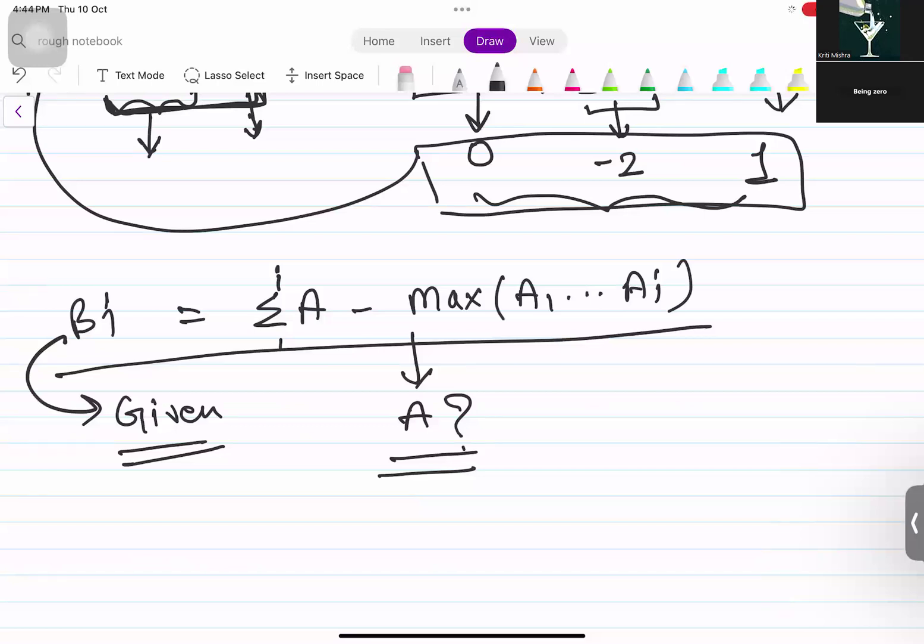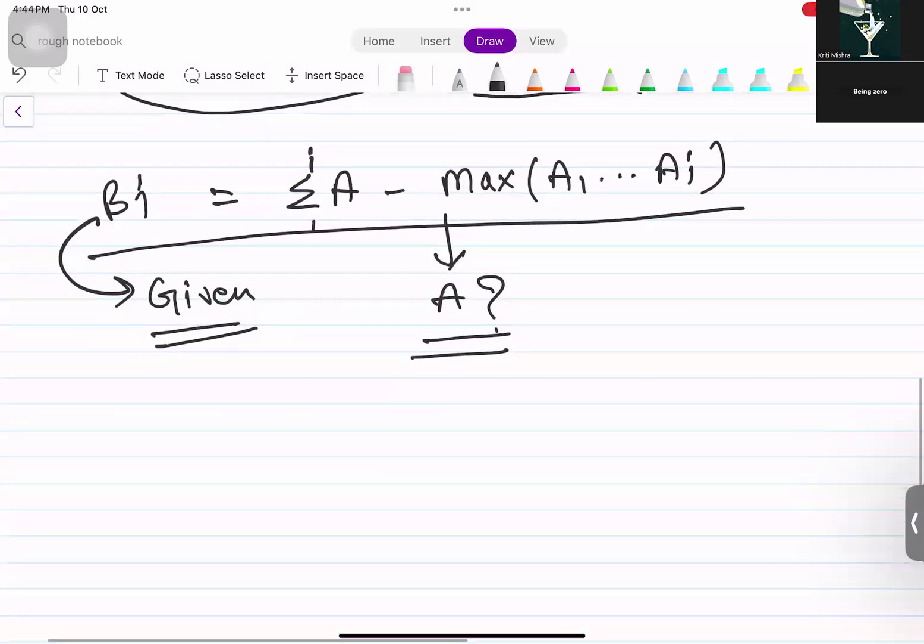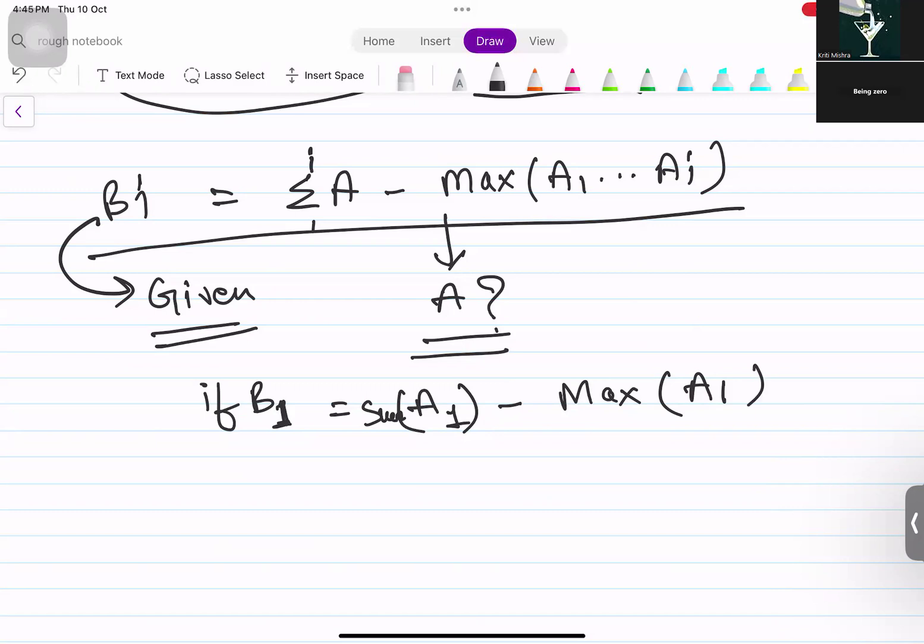You can try with B of 1. The generic formula for B of 1 would be A of 1 minus, that is the sum till A of 1, maximum of A of 1. There are no other elements. So here B of 1 will always be 0. The reason? Because sum is only single element A1, maximum element A1. So it would be 0.